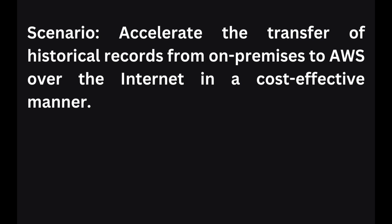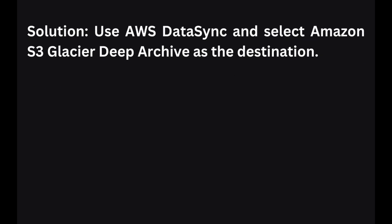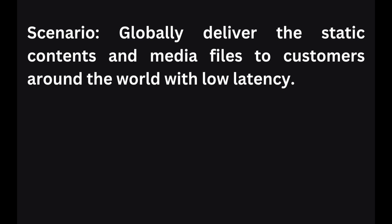In the next scenario, you need to accelerate the transfer of historical records from on-premises to AWS over the internet in a cost-effective manner. The best solution is to use AWS DataSync and select Amazon S3 Glacier Deep Archive as the destination. DataSync optimizes data transfer, ensuring efficient and reliable migration to long-term storage.